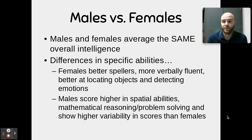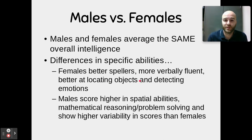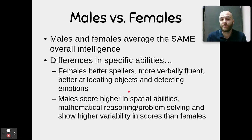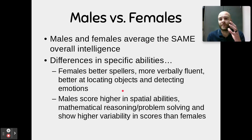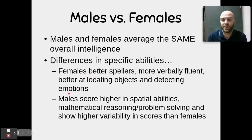Regarding male versus female IQ: males and females average the same overall intelligence score. There are some differences in specific abilities — females tend to score better in verbal tasks, locating objects, and detecting emotions, showing higher emotional and verbal intelligence. Males score higher in spatial abilities, often including mathematical reasoning and problem solving, and show higher variability in their scores. Women are more concentrated around the mean, while men are more spread out, meaning there are more males at both the intellectually gifted and intellectually disabled extremes.